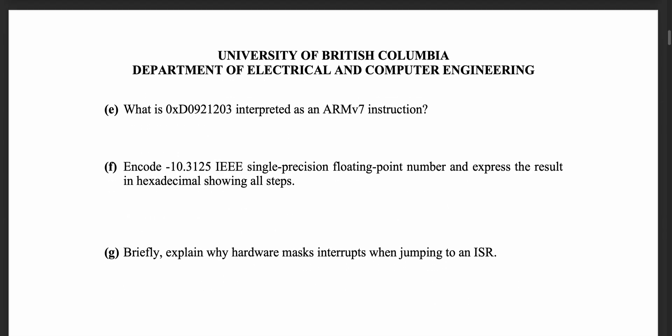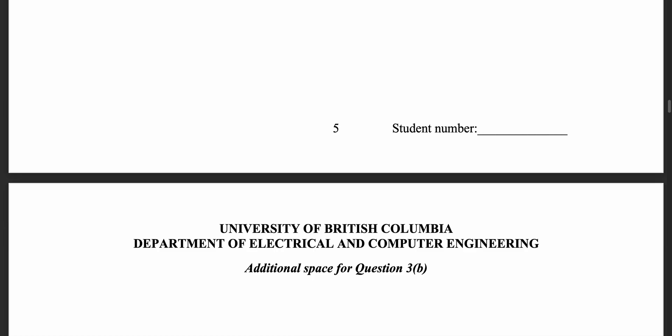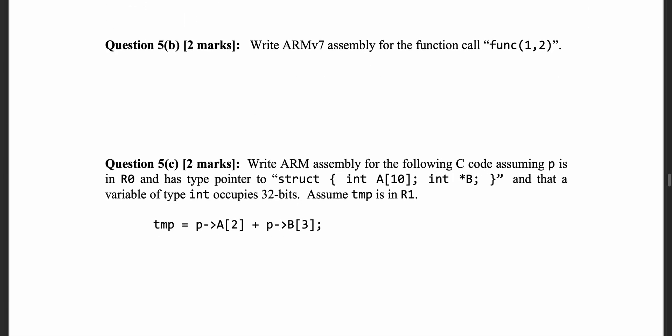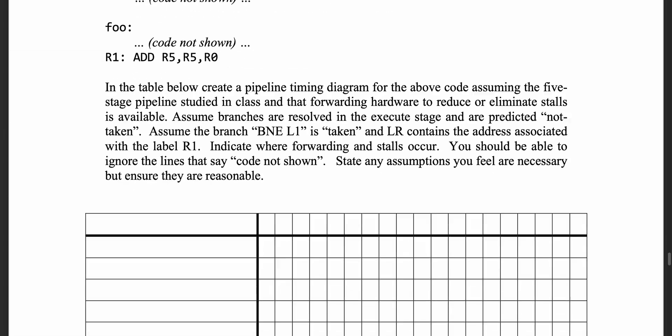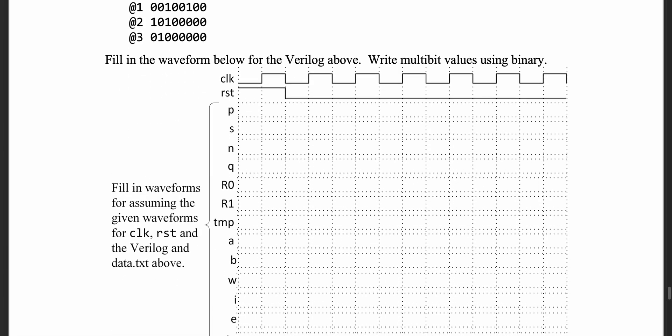Regarding the format for the midterm and the final exam, there will be a mix of shorter answer questions at the beginning of the exam and longer answer questions for the rest. The shorter answer questions are at a competency level — you either know it or you don't. For the longer answer questions, you have to show all your work in detail. Some examples include writing out code that implements a certain design or diagram, drawing a circuit diagram, encoding ARM instructions and converting between ARM and C code, or filling out waveform and pipeline timing diagrams. You are allowed to bring a handwritten formula sheet: a single-sided letter-sized sheet for the midterm, and a double-sided letter-sized sheet for the final exam.